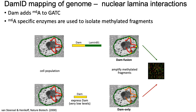Just like with ChIP-seq, by comparing where your reads land in your foreground versus your control experiment, you can get an idea of which regions of the genome are associated with the nuclear lamina in the cells that you targeted.